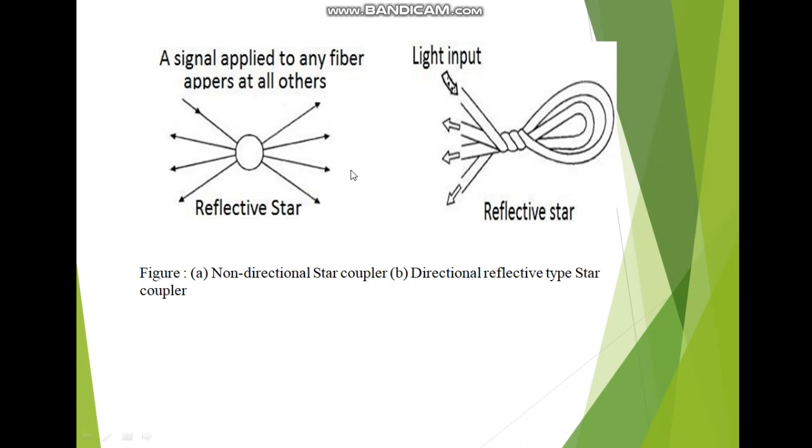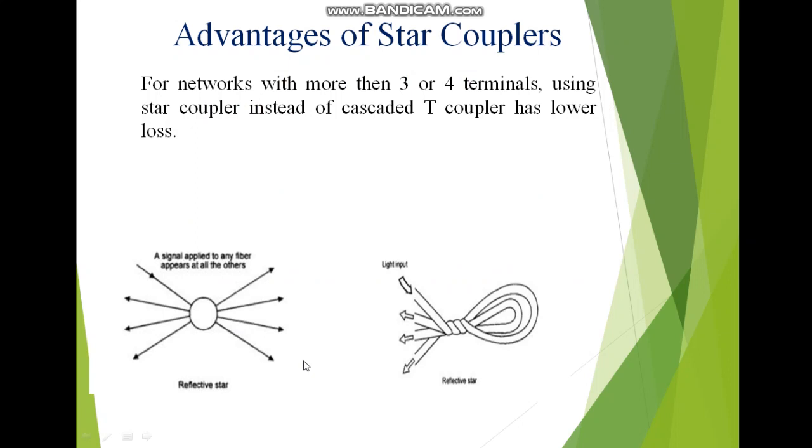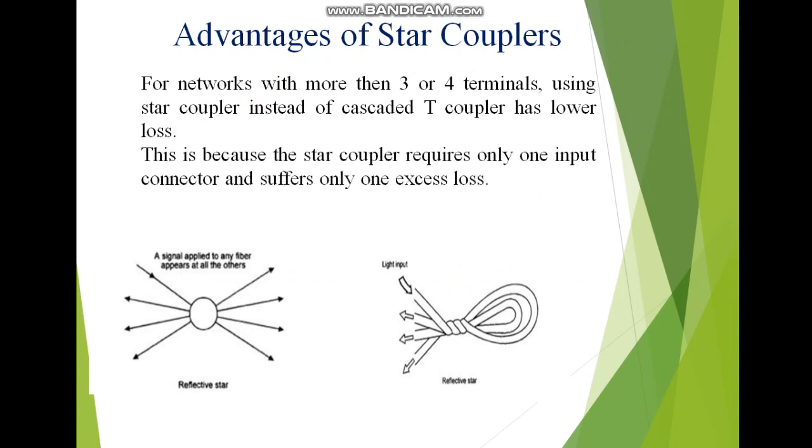Next I am showing you non-directional star coupler. See this is the figure of star coupler. What do you mean by non-directional? Non-directional means if input signal is applied to any fiber, say this is port number one, the signal is applied to this port and it will be uniformly distributed at all other ports including input as well as output. There are so many advantages. If I want to have n number of input and output terminals, then I can't use cascaded T coupler network because it will produce so much loss. Instead of cascaded T coupler, I will use star coupler. This is because star coupler requires only one input connector and suffers only one excess loss.